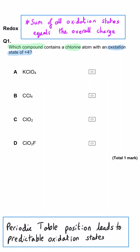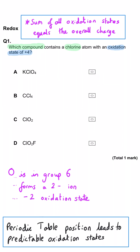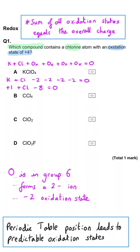In A, oxygen is in group 6, so it will typically be minus 2. So 4 lots of minus 2, add potassium's plus 1 because it's in group 1, add chlorine equals 0. So the chlorine here must be plus 7.